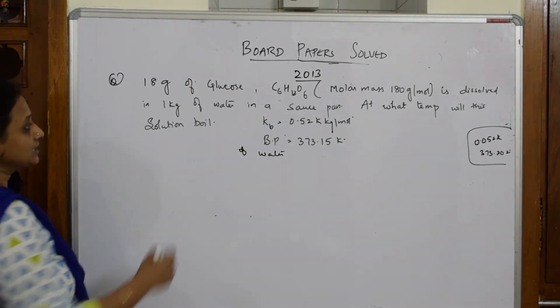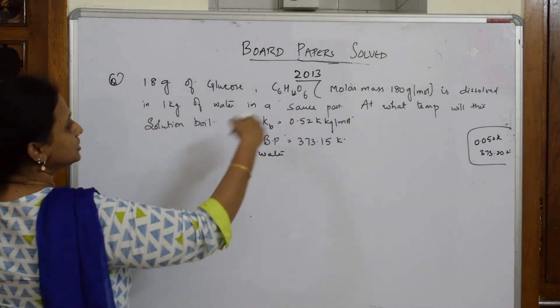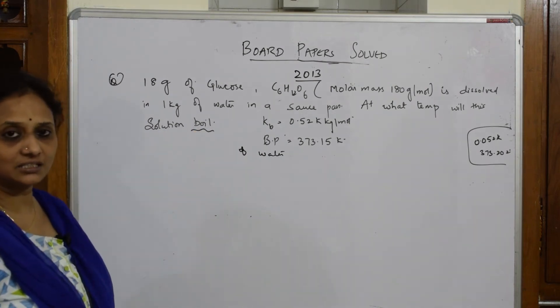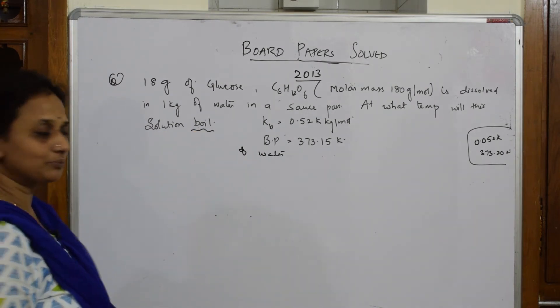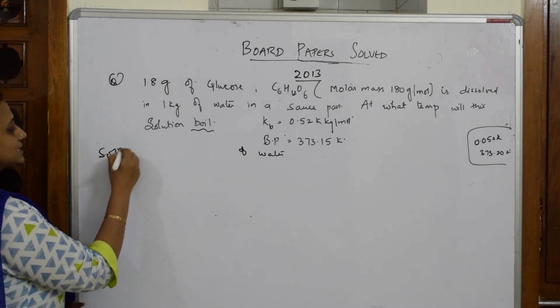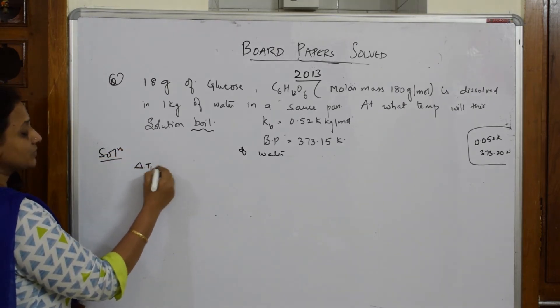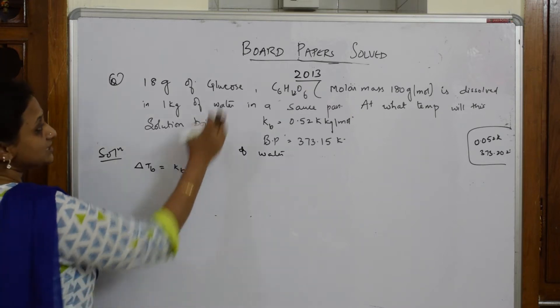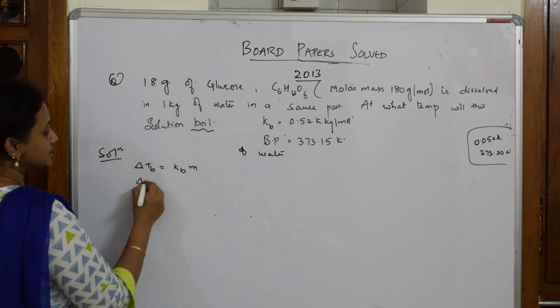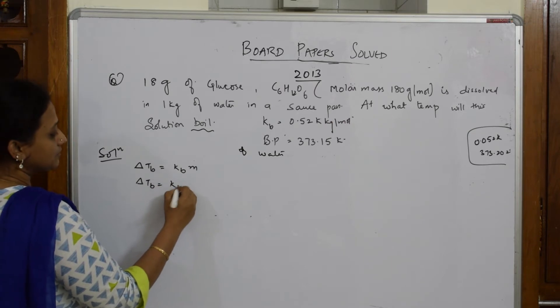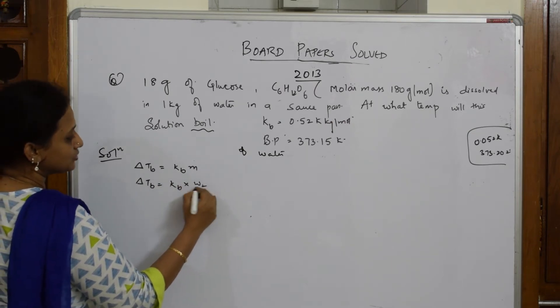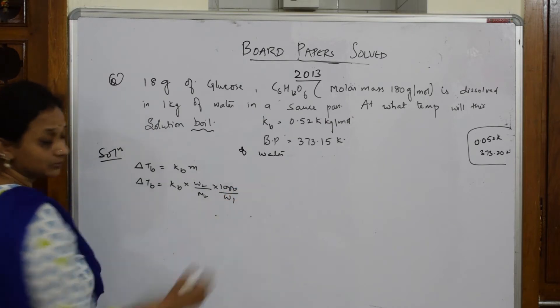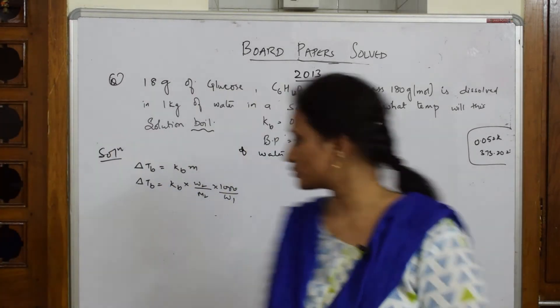First of all, what is the formula which I should write? They have given me dissolved in saucepan, solution boil - that means I have to write the boiling point elevation formula. So let us write that: delta Tb = kb × m. Because weight is given, I have to further write this as delta Tb = kb × molality = W2/(M2) × (1000/W1).